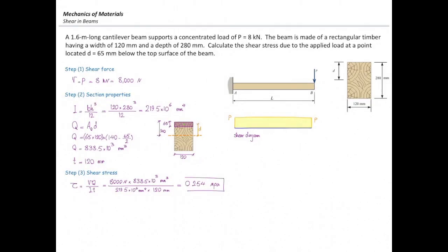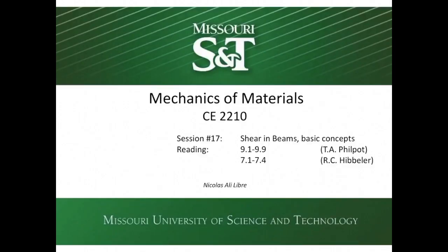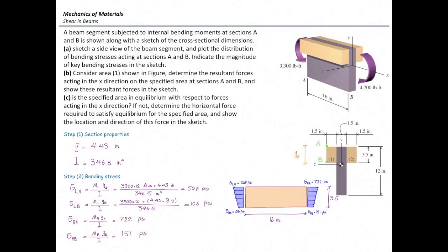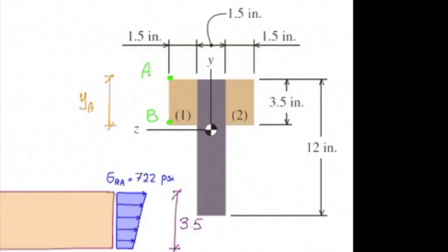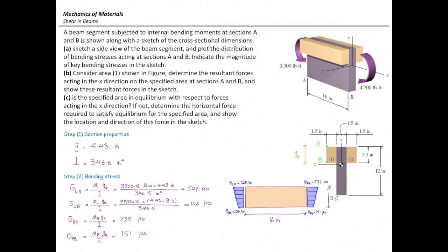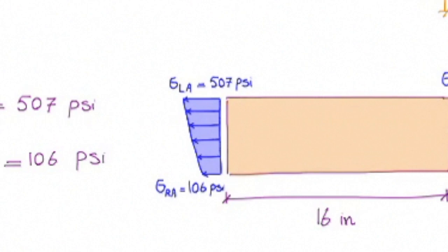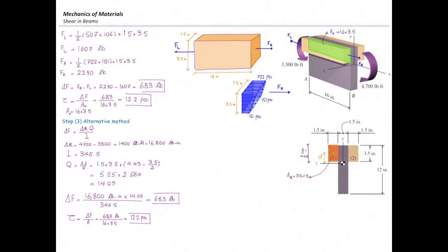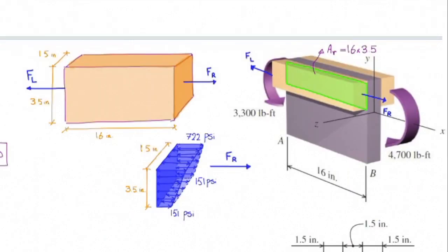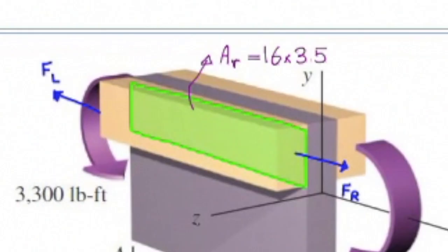I will get back to Lecture 17. At the very beginning of Lecture 17, we talked about this problem. We had this shape and tried to figure out how much shear stress is developed at the connection of these two pieces. We determined the total force acting on the right part and the total force acting on the left, then determined the balancing force acting on the side of that section — because that part connects this shape to the rest of the segment.